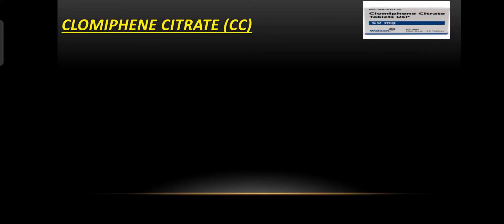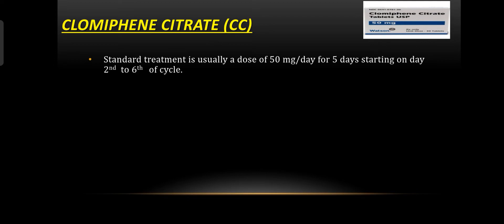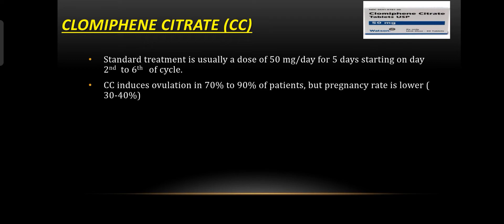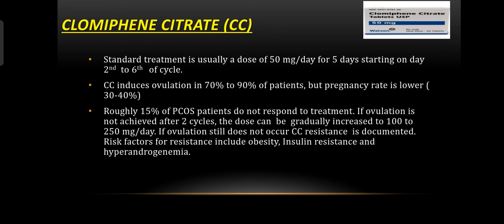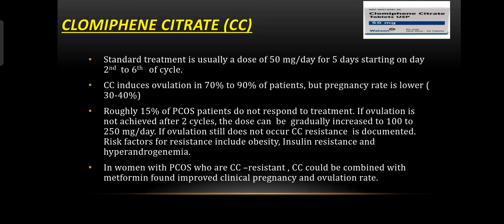How do we prescribe clomiphene citrate? The standard dose is 50 mg per day for five days, starting on day 2 to 6 of the cycle. Clomiphene citrate induces ovulation in 70 to 90 percent of patients, but the pregnancy rate is lower at 30 to 40 percent. Roughly 15 percent of PCOS patients do not respond to treatment. If ovulation is not achieved after two cycles, the dose can be gradually increased to 100 to 250 mg per day. Clomiphene citrate resistance risk factors include obesity, insulin resistance, and hyperandrogenemia. In women with PCOS who are clomiphene-resistant, combining clomiphene citrate with metformin has been found to improve clinical pregnancy and ovulation rates.